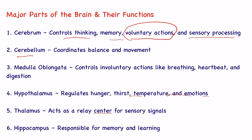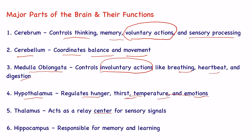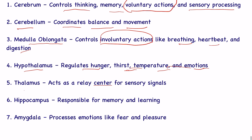Cerebellum coordinates balance and movement. Medulla oblongata controls involuntary actions like breathing, heartbeat, and digestion. Hypothalamus regulates hunger, thirst, temperature, and emotions. Thalamus acts as a relay center for sensory signals.